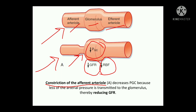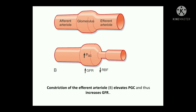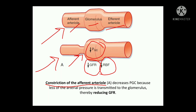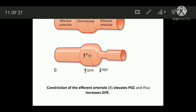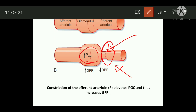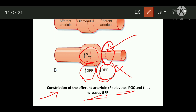Now we'll discuss the constriction of the efferent arterioles. Whenever there is constriction of the efferent arterioles, this will lead to a rise in the glomerular capillary hydrostatic pressure. Once this pressure increases in the glomerulus, this will cause an increase in GFR. The renal blood flow will be decreased because there is constriction, but GFR will be increased. Constriction of the efferent arterioles elevates the glomerular capillary hydrostatic pressure and causes an increase in GFR.